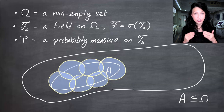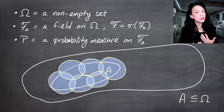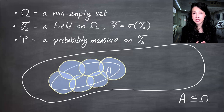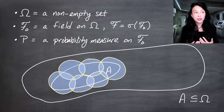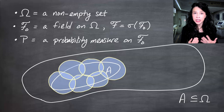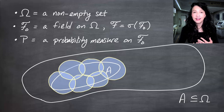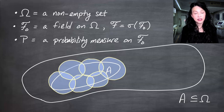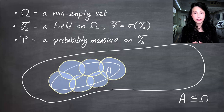But clearly, that sum will be too large for many reasons. One, we have the region outside of A. Two, we've got some overlap in these sets, so we're double-counting some stuff. And you might want to talk about the probability measure of the union of these sets. But sometimes it will take a possibly infinite countable collection of sets to cover A, and that's not necessarily in the field F-naught — and we can only work with sets that are in F-naught.